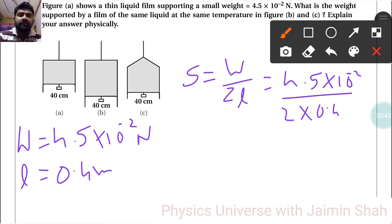So S = 4.5/0.8 = 5.625 × 10^-2 Newton per meter. This is our surface tension.